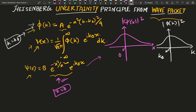Now we define the half-widths Δx and Δk. Δx is defined such that if we displace by Δx from x equals zero, and Δk is defined such that if we move Δk from k equals k-naught, then the wave function drops to half of its maximum value. So Δx and Δk are both half-widths of their respective Gaussian distributions.